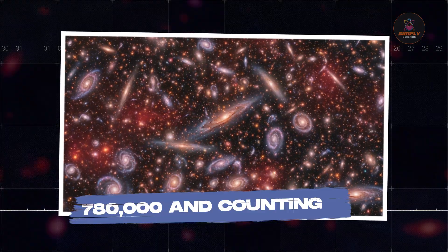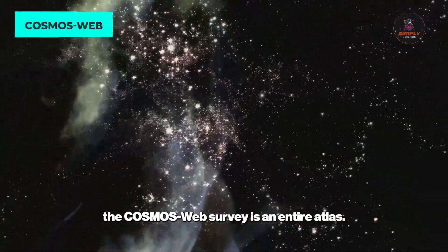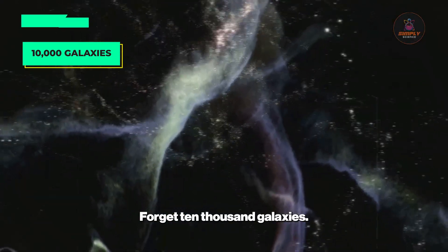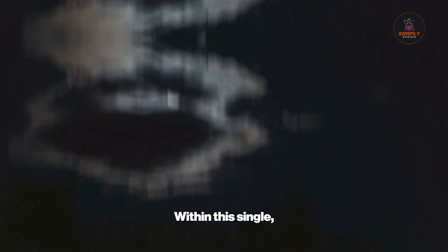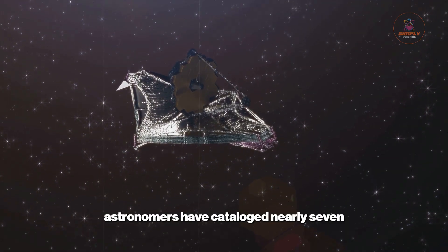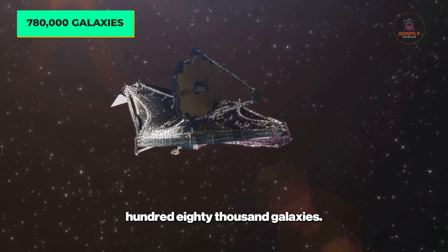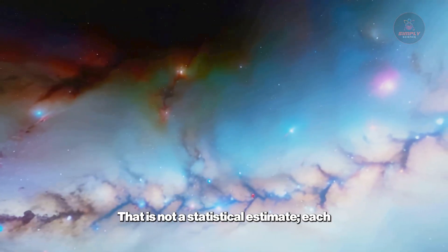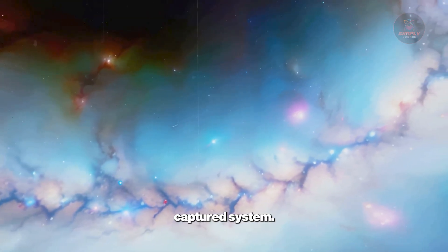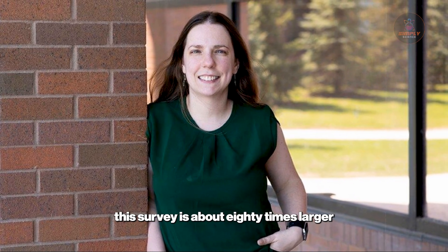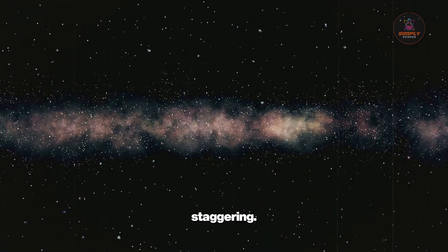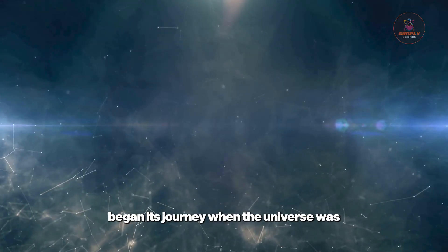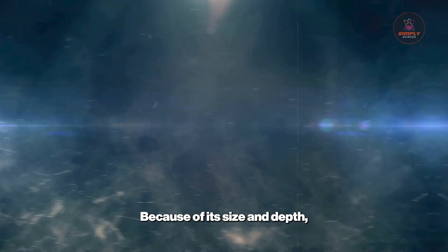780,000 and counting. If Hubble's deep field was a single photograph, the COSMOS-Webb survey is an entire atlas. Forget 10,000 galaxies. Over 250 hours, Webb's gaze swept across a region of the sky roughly the area of three full moons. Within this single continuous mosaic, astronomers have cataloged nearly 780,000 galaxies. Let that number sink in for a moment—that is not a statistical estimate. Each one is a real, captured system. Co-led by Jeyhan Kartaltepe at the Rochester Institute of Technology, this survey is about 80 times larger in area than the Hubble Ultra Deep Field and achieves nearly the same depth. The sheer scale is honestly staggering. The light from some of these systems began its journey when the universe was less than 300 million years old.